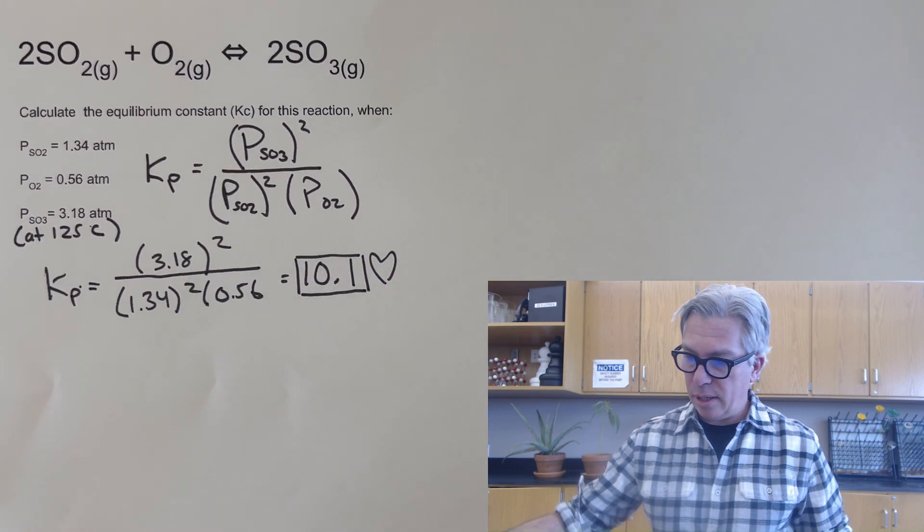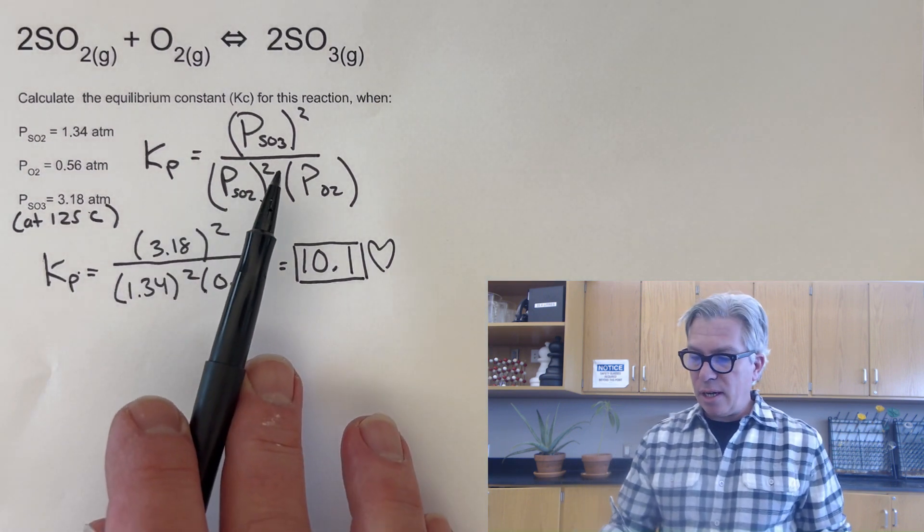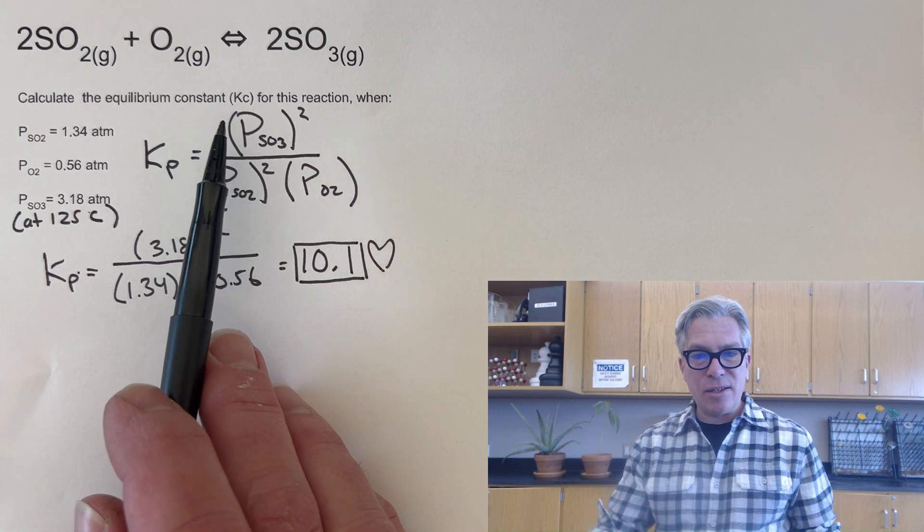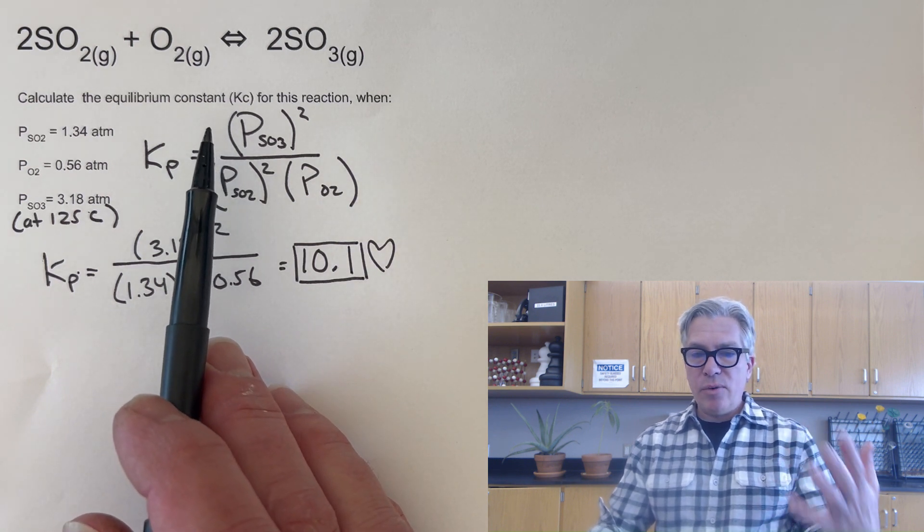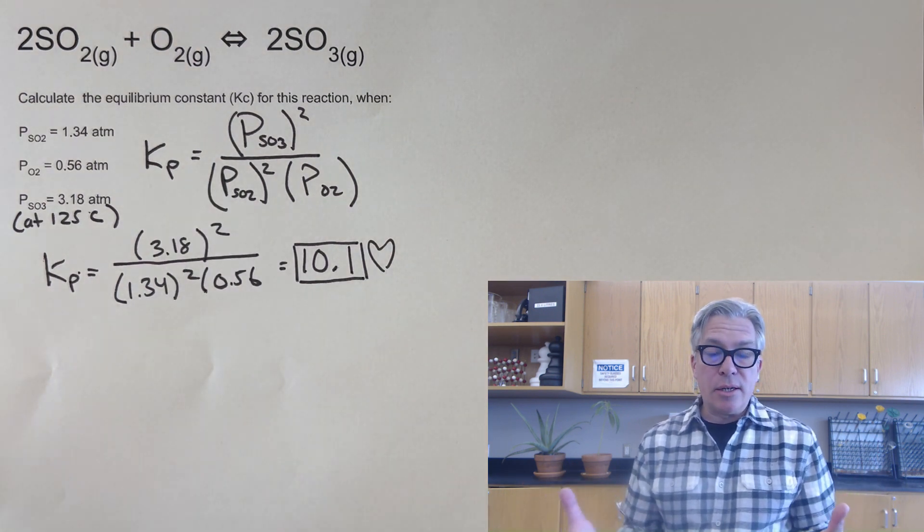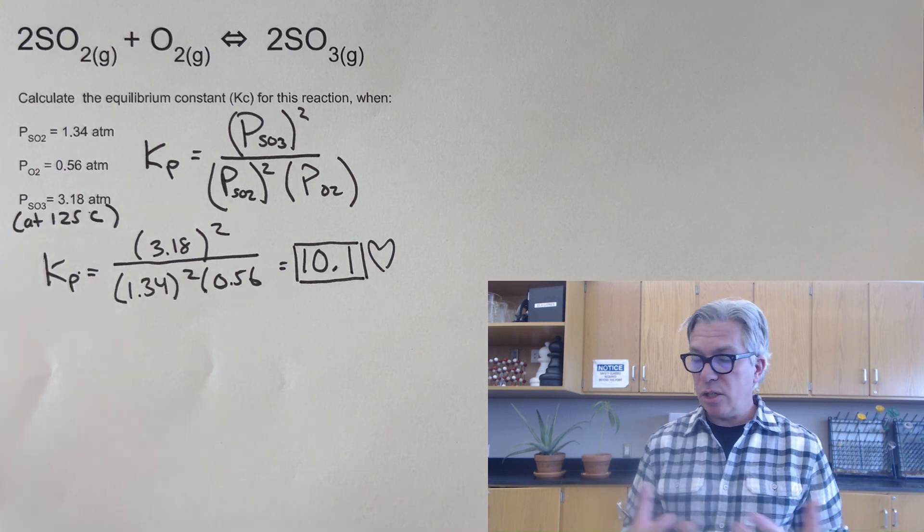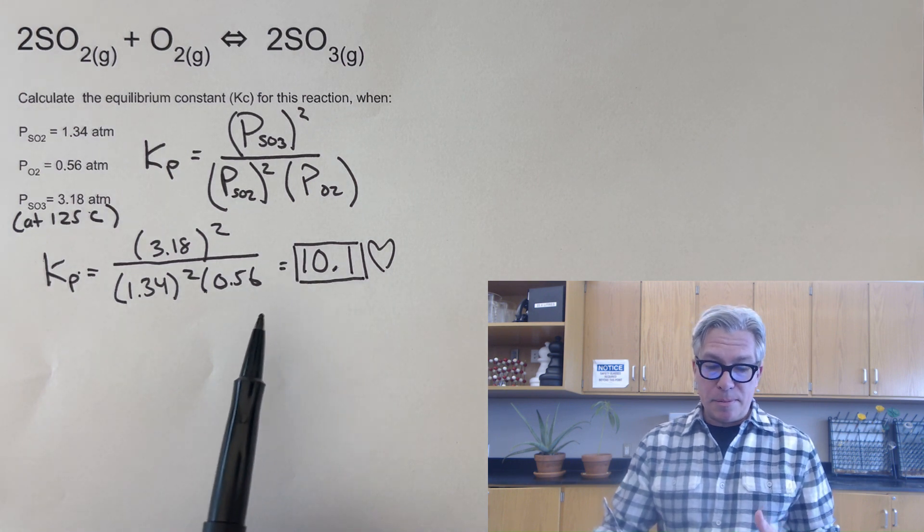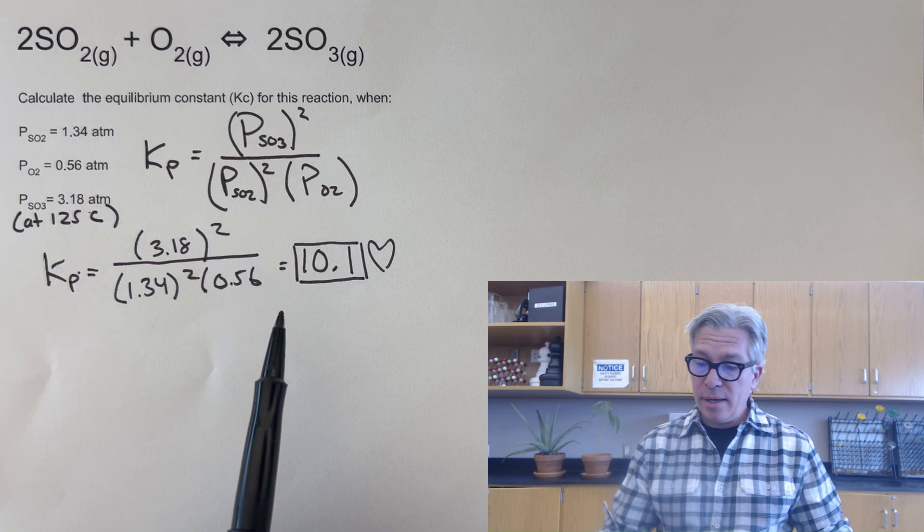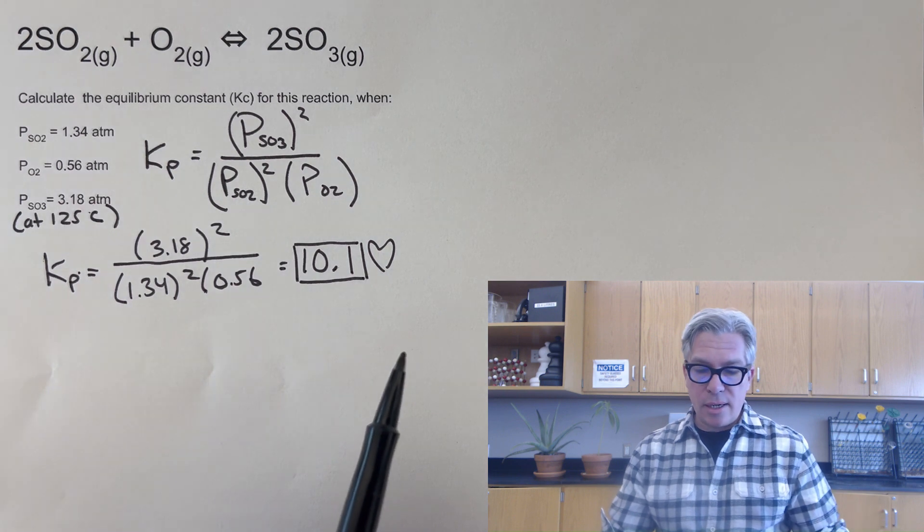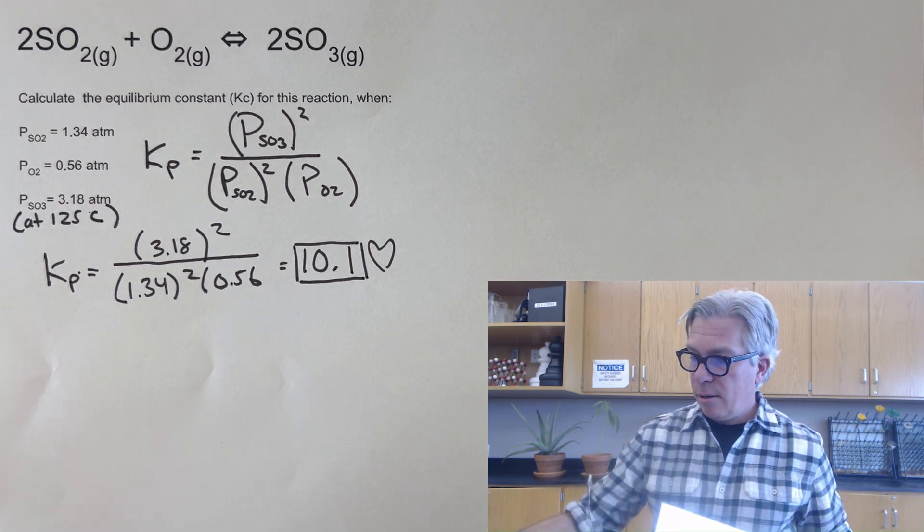Now we're going to do one more step and I have a formula to tell you about. This one says, I've got my Kp expression, I've calculated Kp which is 10.1. And what if I wanted to know what the Kc value is for this reaction? Like we've got gases and they have pressures, but they also have volumes in liters and the number of moles is in there, so we could conceivably get a concentration in moles per liter. But what would that be? Would my Kp value be the same as Kc or would it be different? Well, the answer is it depends. And your textbook probably has a derivation of this formula somewhere in it. You can Google it online. I'm not going to spend a lot of time doing that, but let's take a look.